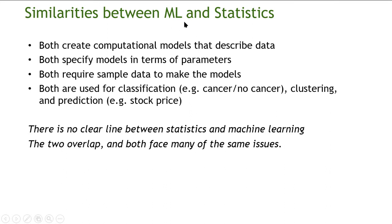Here are some similarities between machine learning and statistics. Both create computational models that describe data. If you're familiar with statistics, you know about regression, where you take data points and fit them to a line — that is a model that describes the data. You can also describe data using mean, variance, and a Gaussian distribution, which looks like a bell-shaped curve.